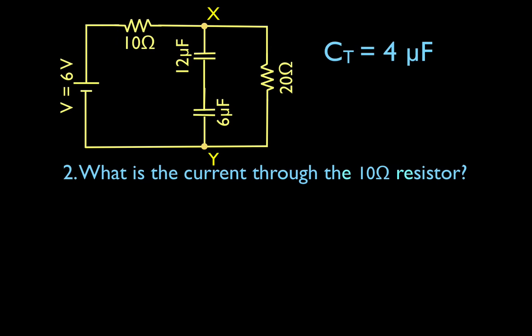Number two: what is the current through the 10-ohm resistor? We said the current is running — we're in steady state. The capacitors are charged, the current is running through the outer branch, and there's nothing blocking the current there. We have a 10 and a 20 ohm resistor that are in series. The current through each is the same — that's the current rule for resistors in series. We can use V equals IR, Ohm's law, to find it.